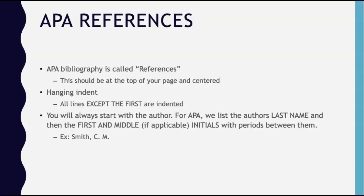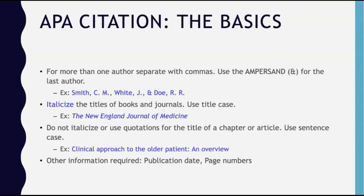For example: Smith, C.M. It is very likely that many of your sources will have more than one author. When a source has two authors, use the AND symbol — called the ampersand — between the names. For example: Smith, C.M. & White, J.